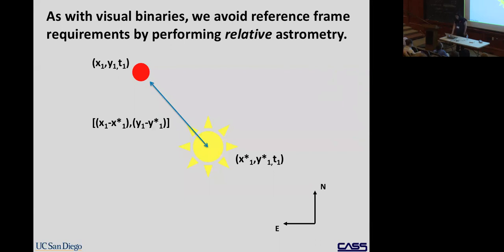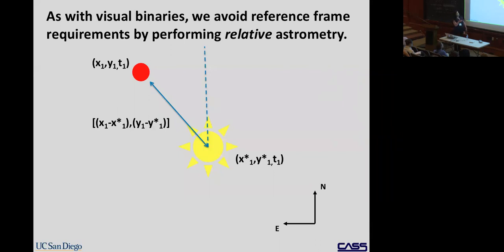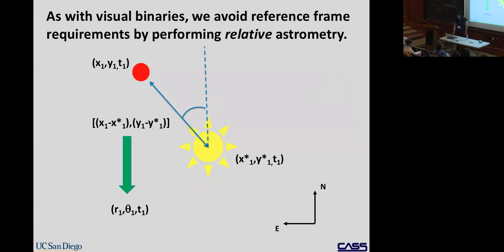Since we're doing relative astrometry, we measure the positional difference in X and Y — just the vector between star and companion. In papers presenting astrometry for directly imaged planets, it's usually converted to polar coordinates. The convention is to use due north as the reference and measure the angle between that vector and north, reporting separation R and position angle theta.